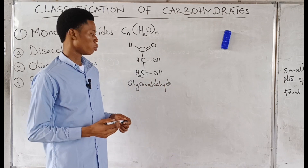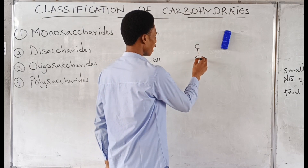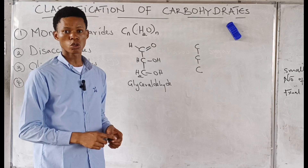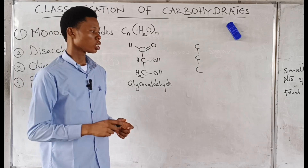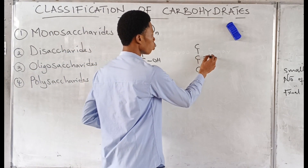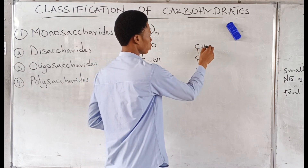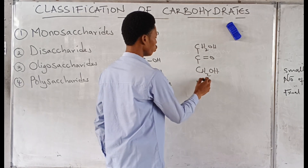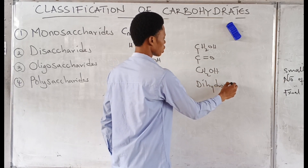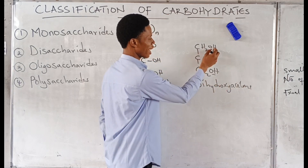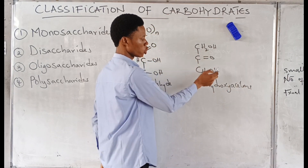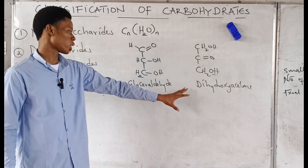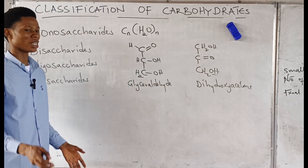We also have dihydroxyacetone — what functional group? Ketone. Dihydroxyacetone contains a ketone functional group. Dihydroxy means two hydroxy groups, then acetone. So dihydroxyacetone and glyceraldehyde are the smallest monosaccharides we have.